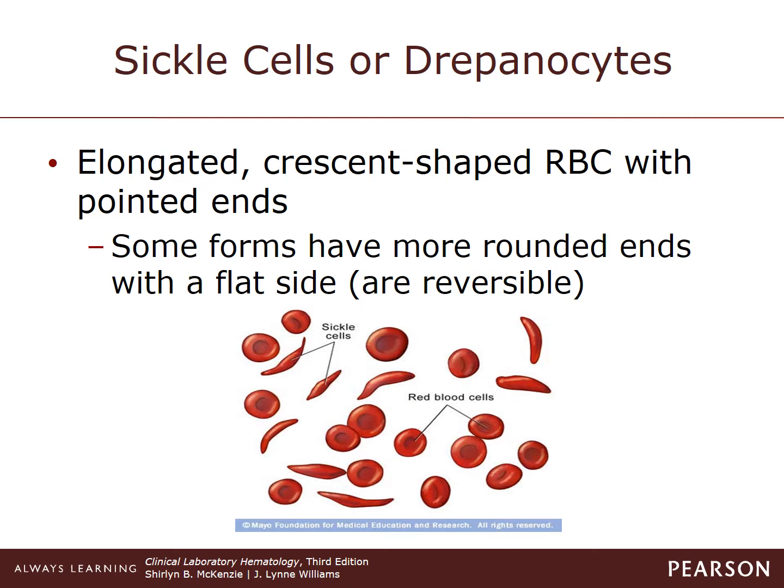Sickle cells are significant. Also known as drepanocytes, they have an elongated crescent-shaped erythrocyte with pointed ends. Some forms have more rounded ends with a flatter, concave side. The modified forms of the sickle shape can be capable of reversing to a normal discocyte. Sickle cell formation is observed in patients with sickle cell anemia. The hemoglobin within the cell is abnormal and polymerizes into rods at decreased oxygen tension or pH.